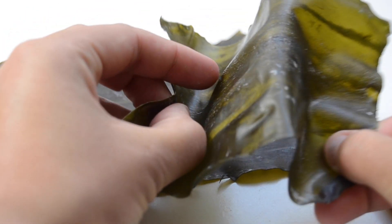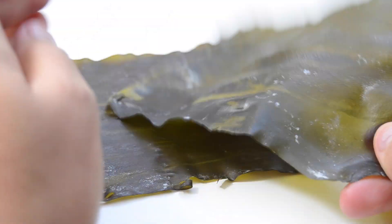Julia Lohmann, another designer that works with kelp, said something interesting. She said that to work with it, she created an analogy that kelp equals leather.